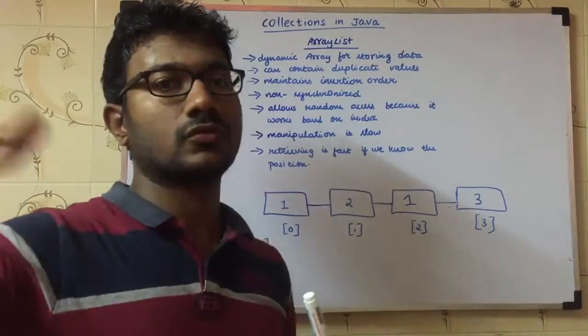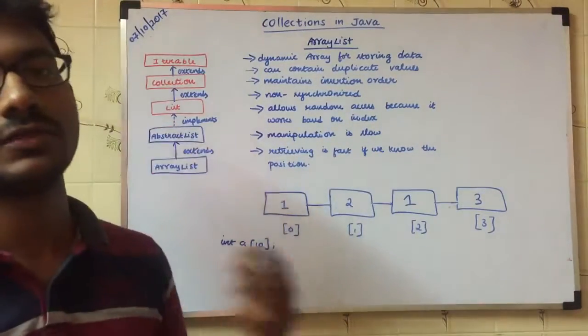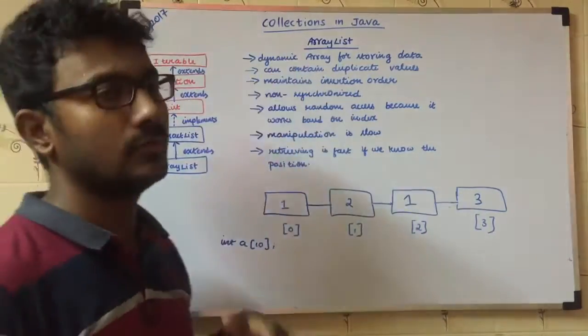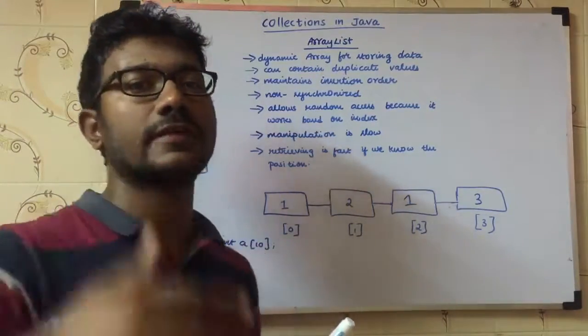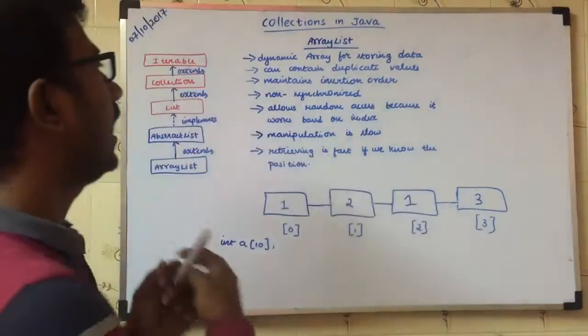If you have to insert data at the 11th or 12th position, no problem. This is an index out of bound exception. It will automatically grow. If you delete it, it will automatically shrink the size. That is dynamic.